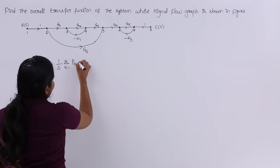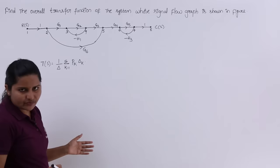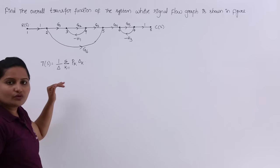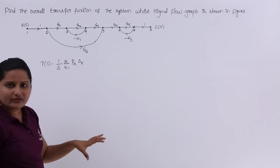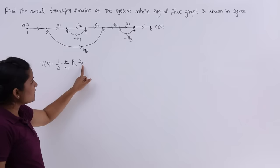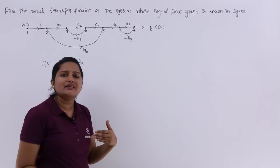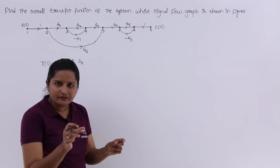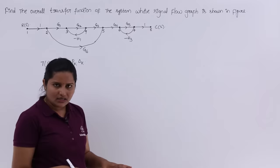We know the values of Δ, Pk, and Δk from the previous video. Delta (Δ) is equivalent to 1 minus the sum of all individual loop gains, plus the sum of two non-touching loop gains, plus three non-touching loop gains, and so on. Pk represents forward path gains, and Δk is delta without the loops touching the kth forward path.